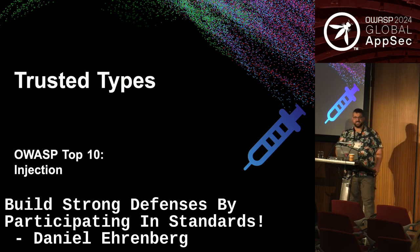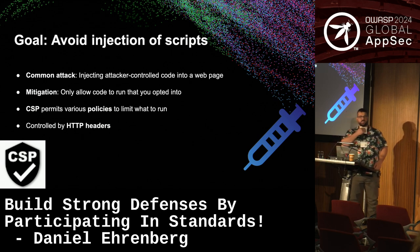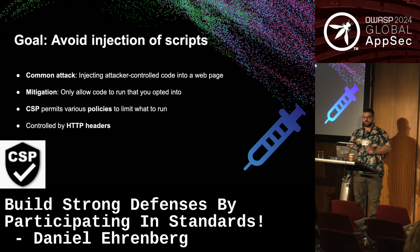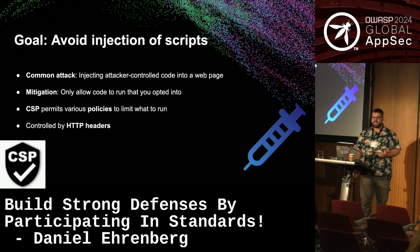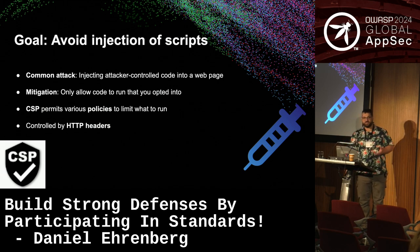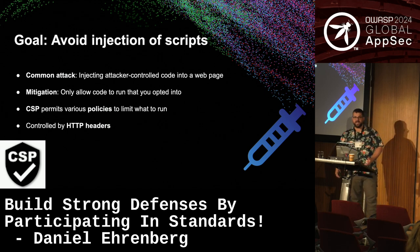One thing currently under development is Trusted Types, intended to address another OWASP Top 10 vulnerability: injection — specifically, injection of scripts. The attack is the attacker somehow injecting JavaScript code into the webpage. The defense is: what if the browser only ran the code that you actually asked it to run? There are at least three ways to run JavaScript: in a script tag, in an event handler as an attribute of an element, and in JavaScript colon URLs. Having to remember all these different places where code can run is error-prone.